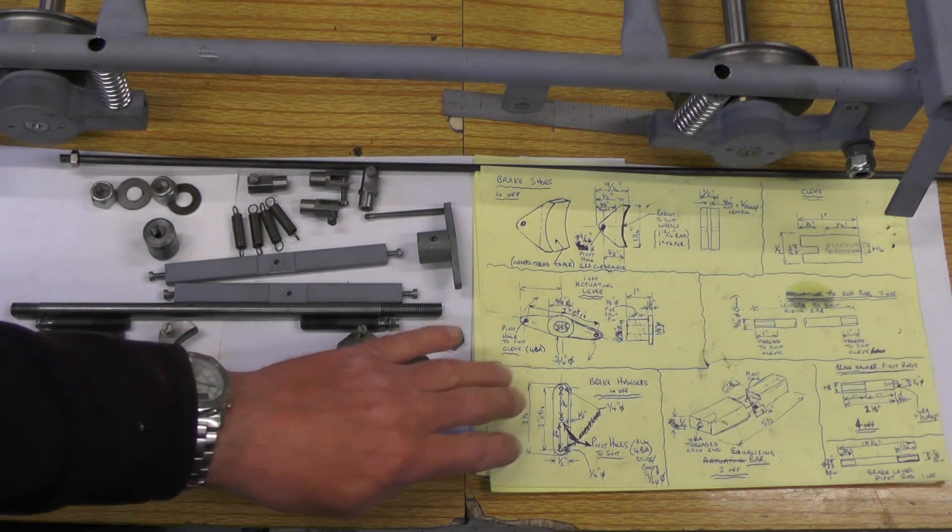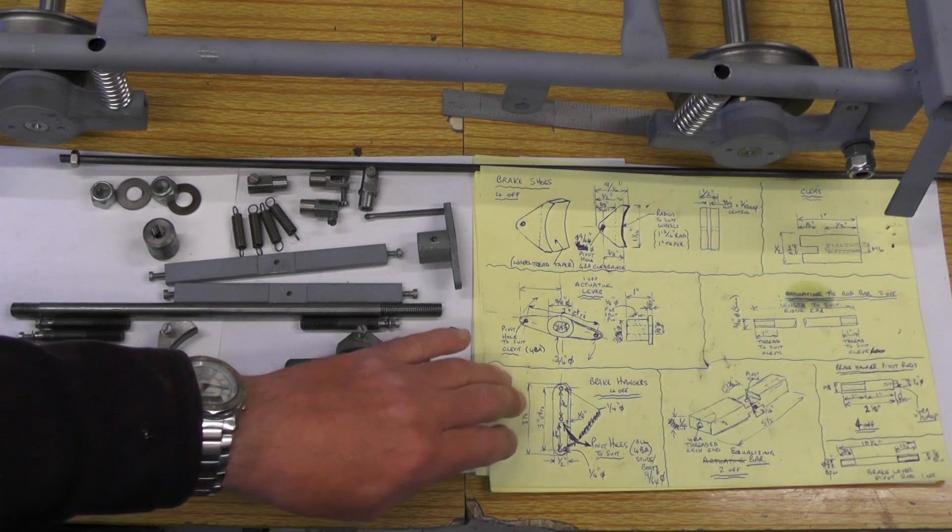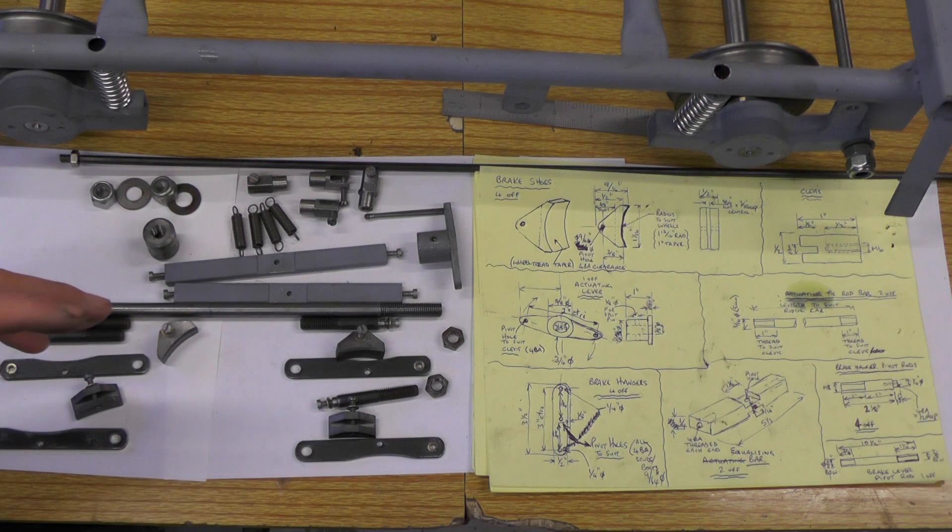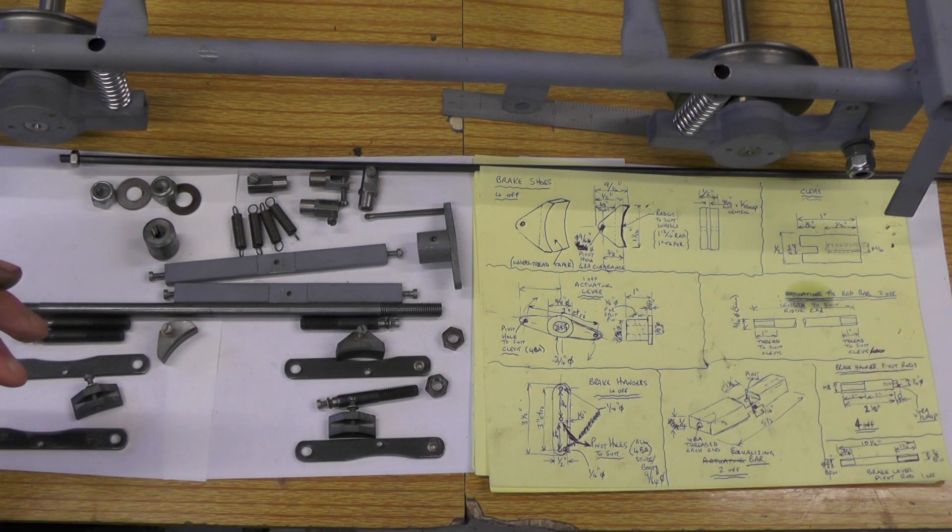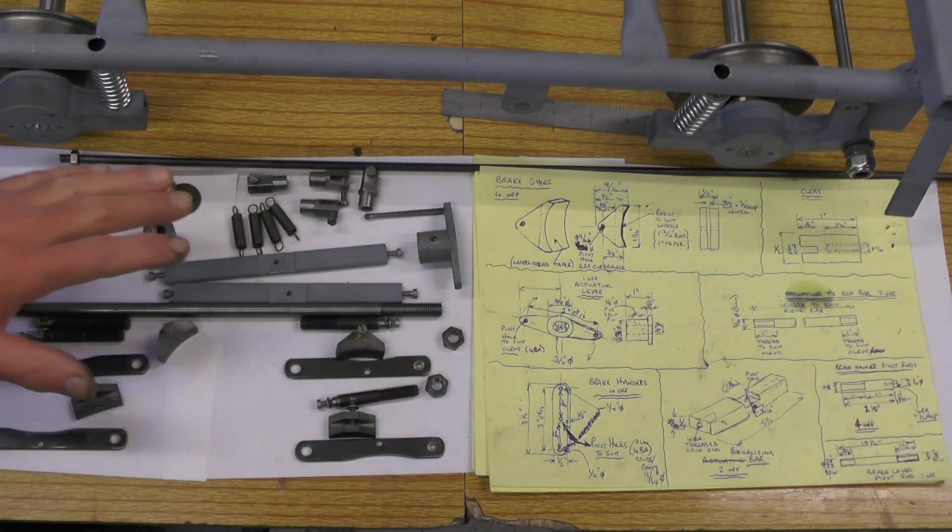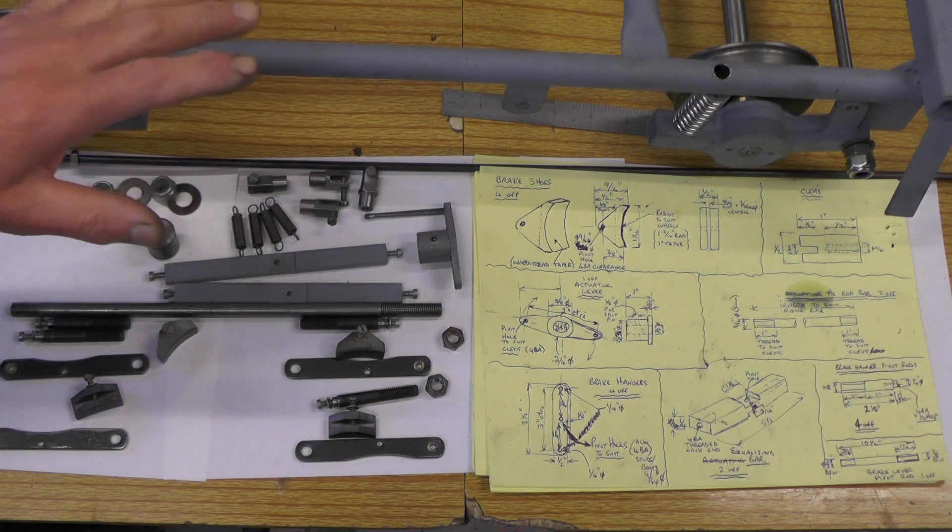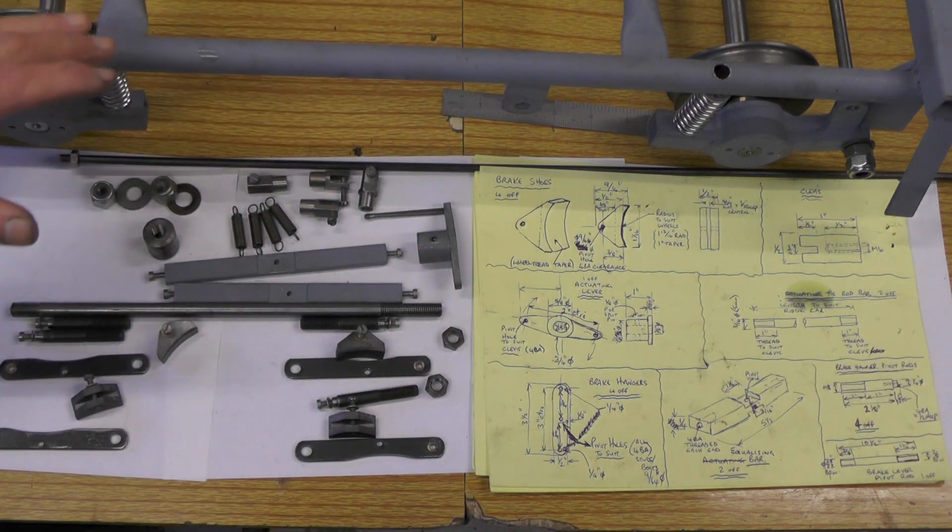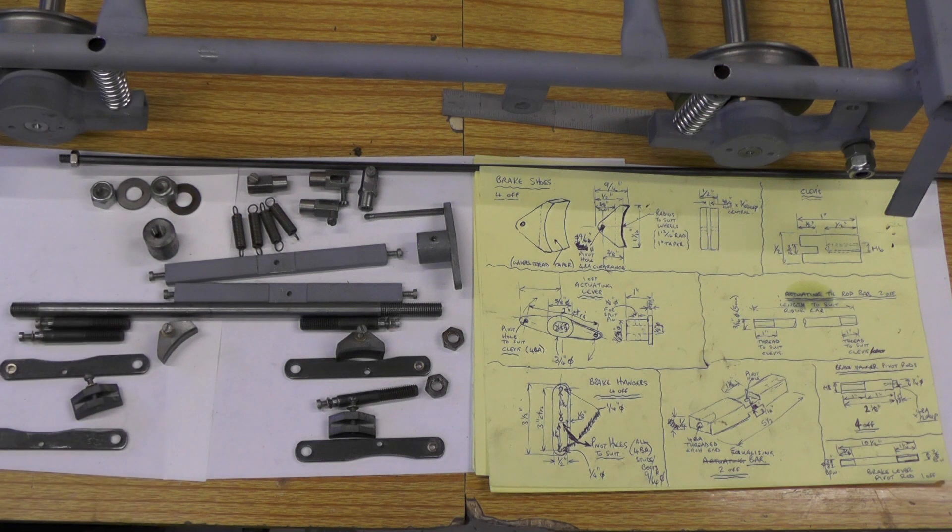Like I said in a previous video about the suspension units, there's nothing hard and fast about these sketches I've made in the dimensions. You can adapt them to suit your materials or to suit a different size riding car. What I'll do then in part five, I'll get all these parts assembled onto the actual riding car and show you where they go, how they work, et cetera.